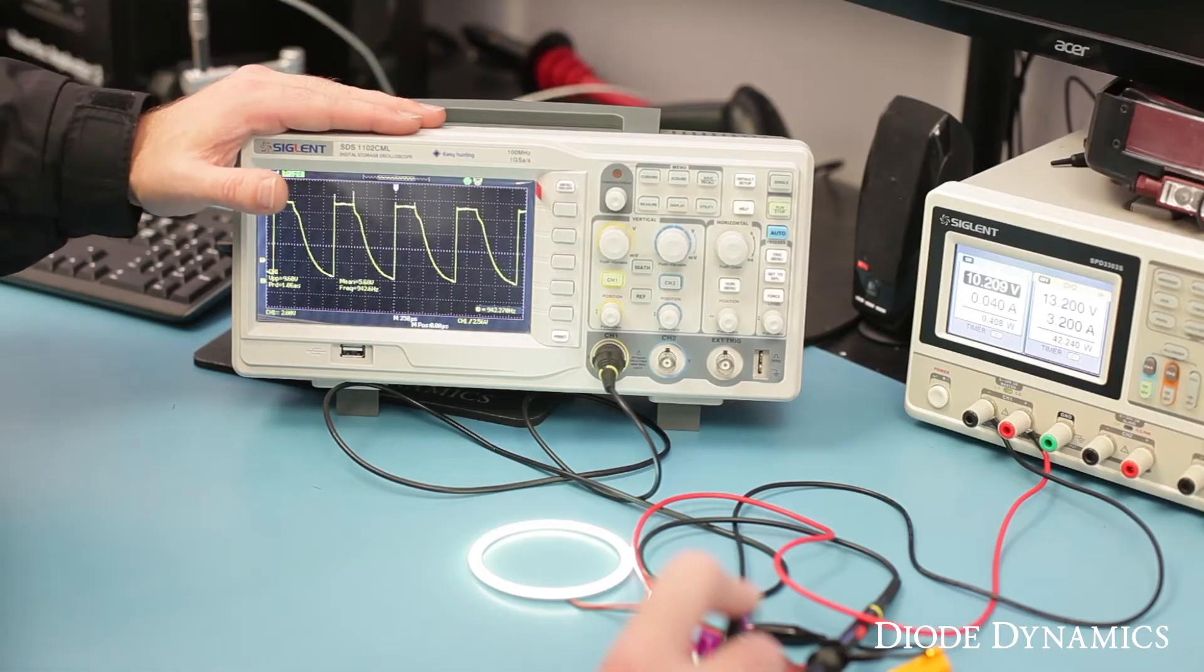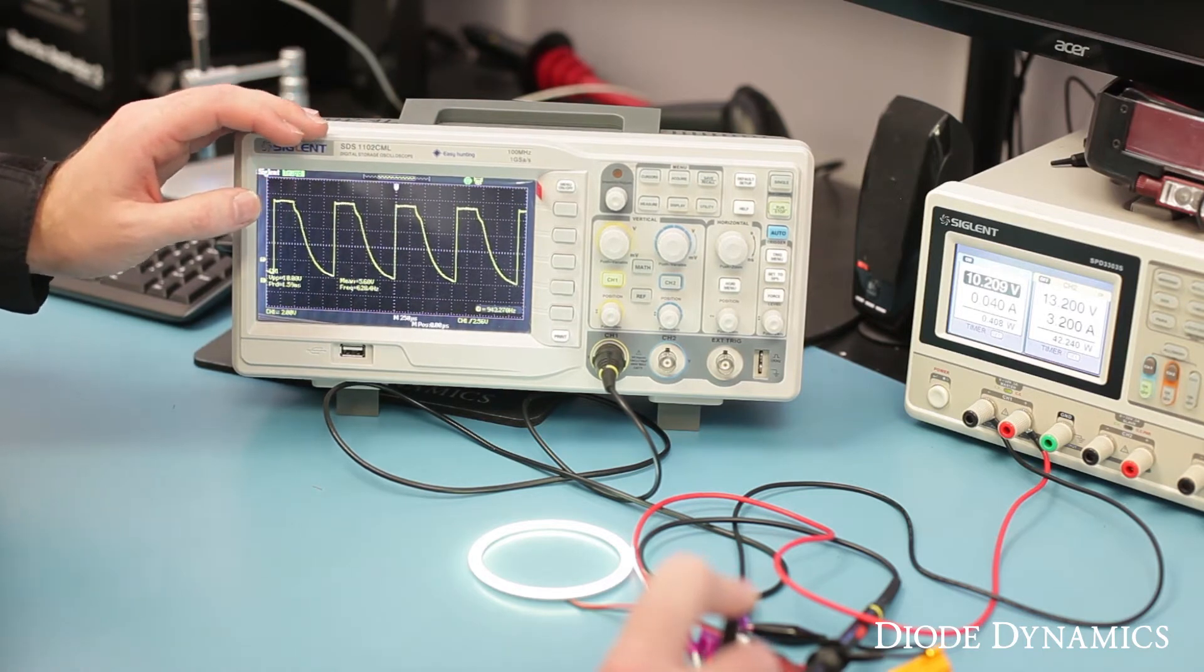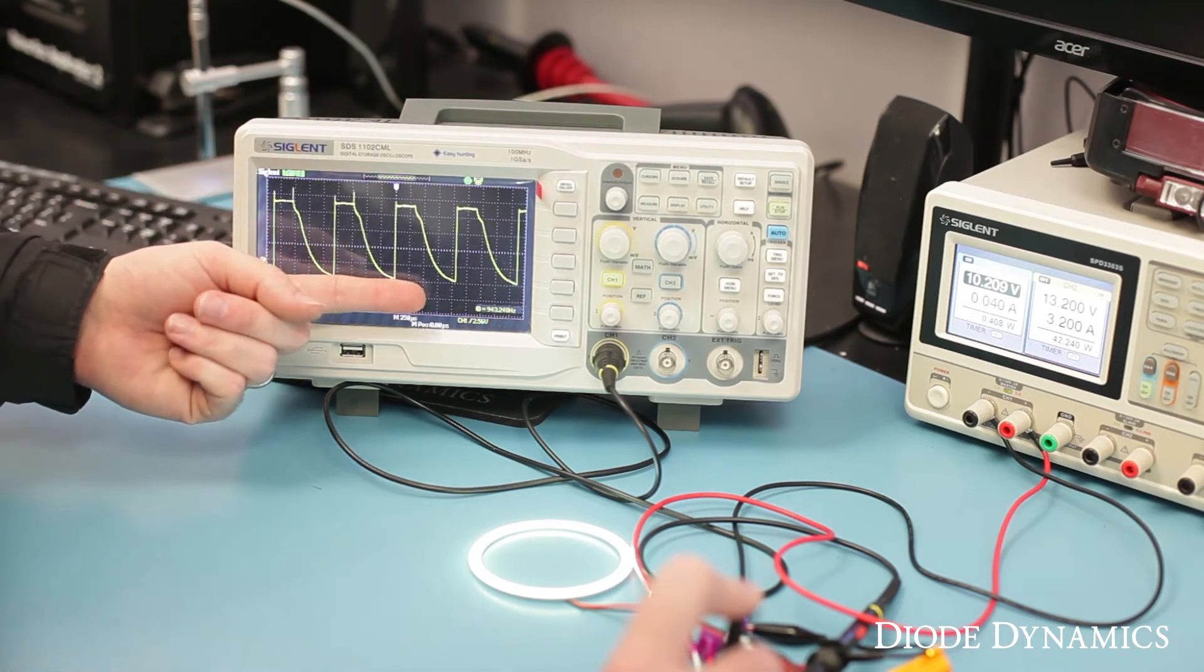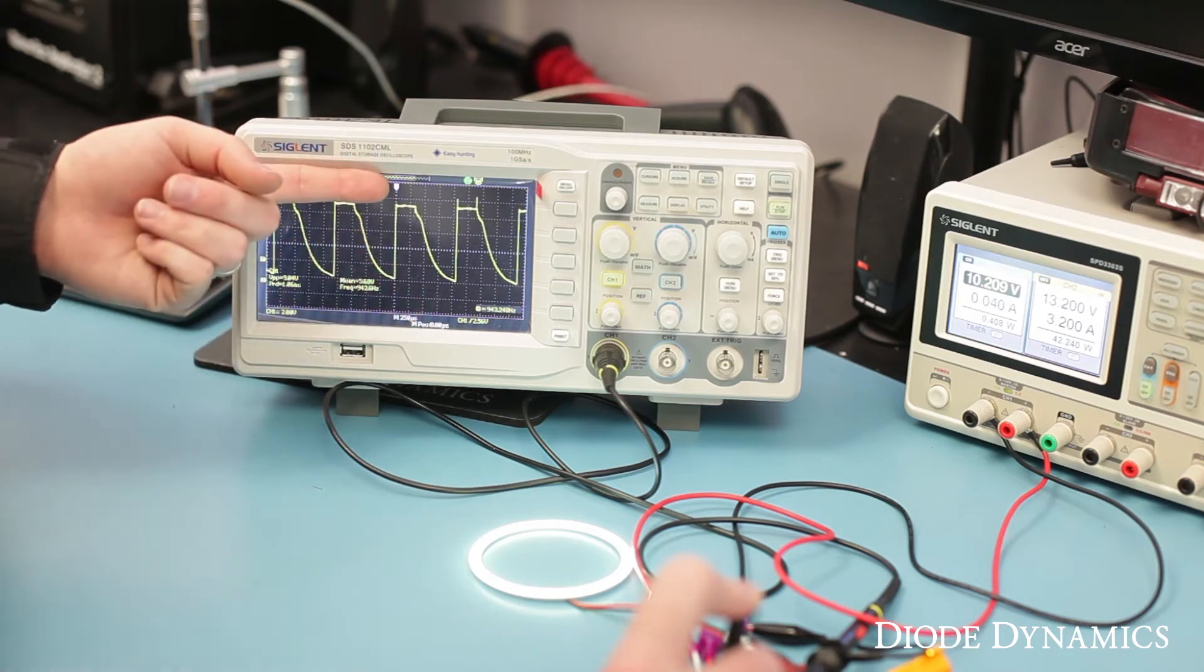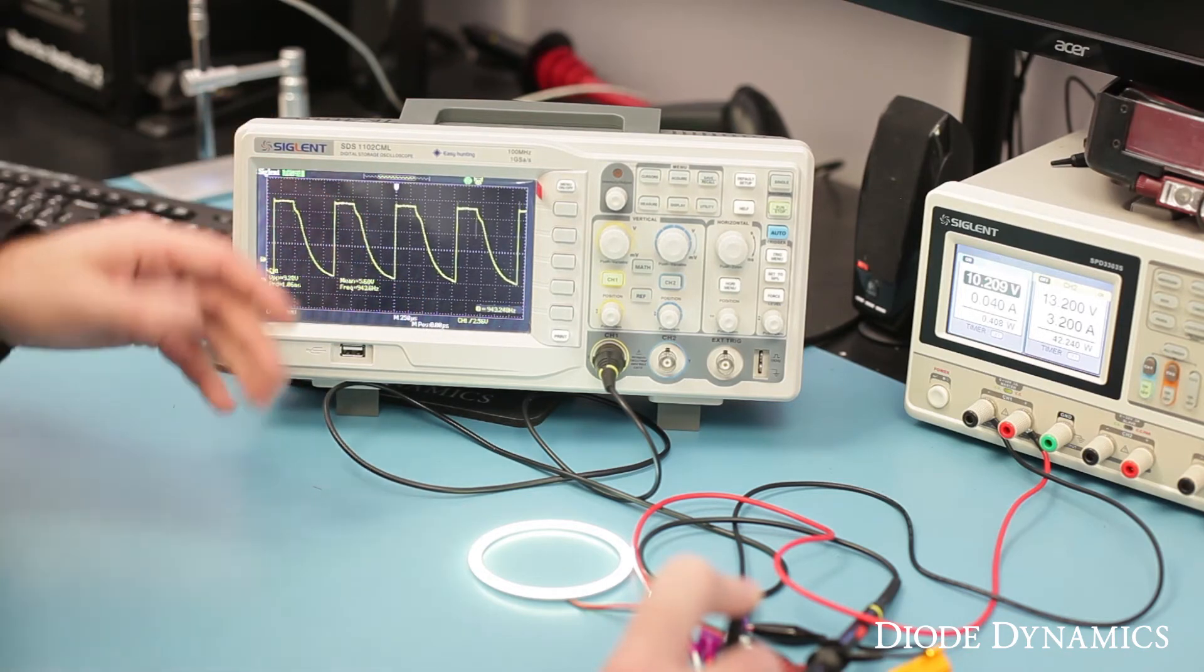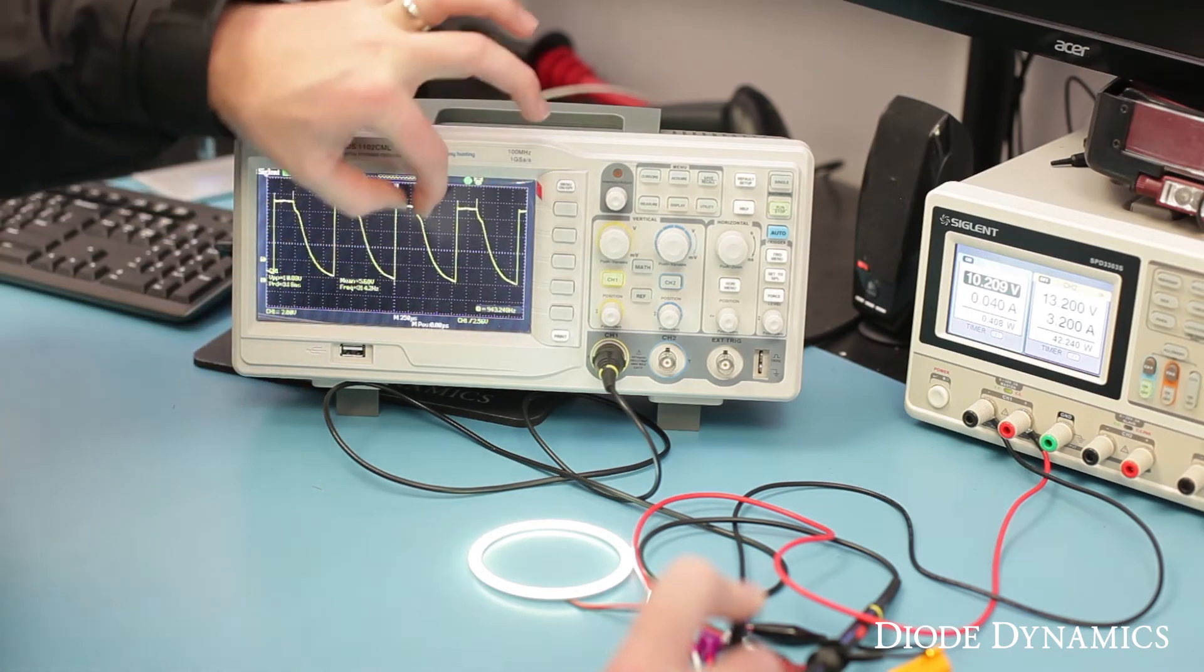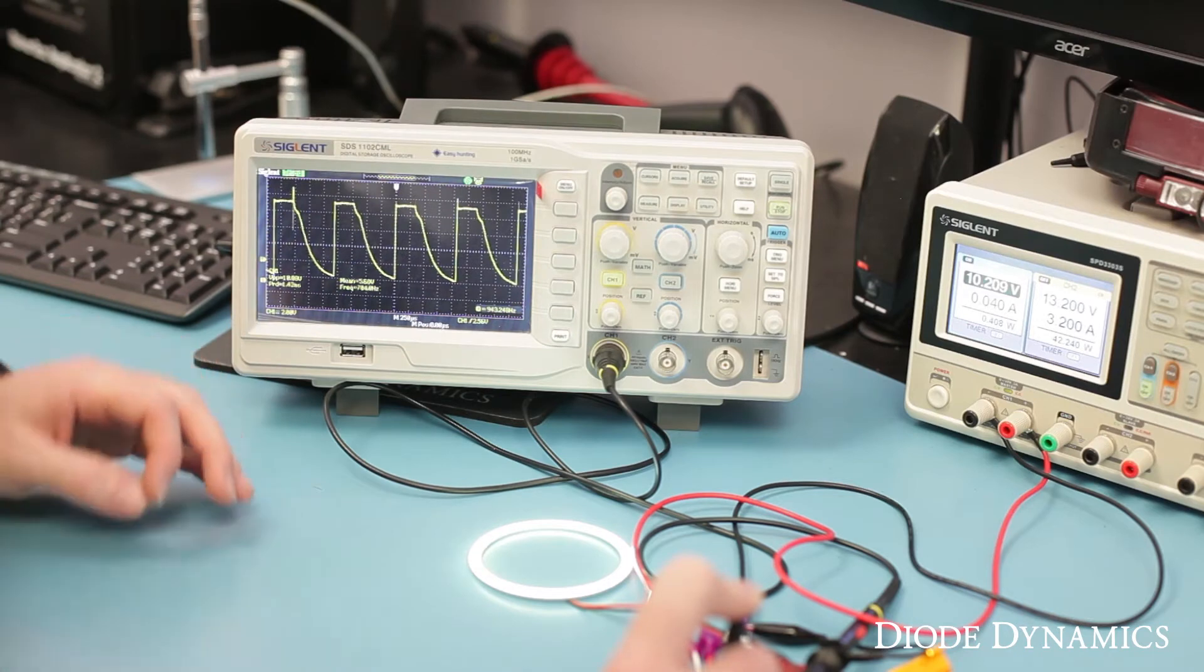It's easiest to show this on an oscilloscope, which is a device that displays power signals. We've set this so that the low side is 0 volts and the high side is 12 volts. Right now, we're right at 50% brightness. You can see that the module is off and then on for about the same period of time. This is called the pulse of power.